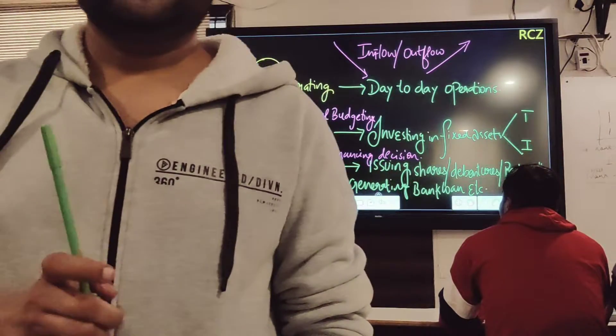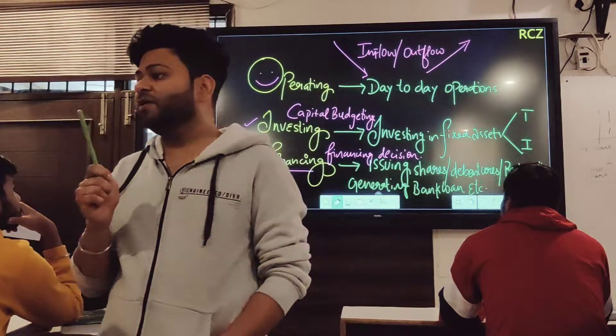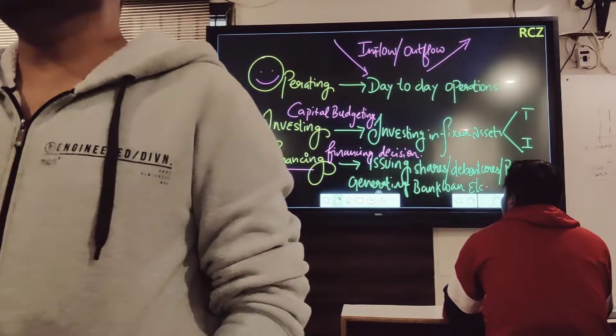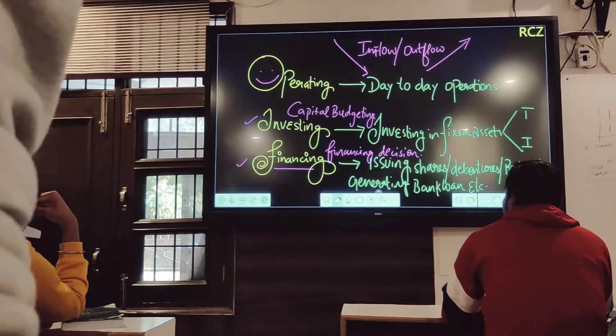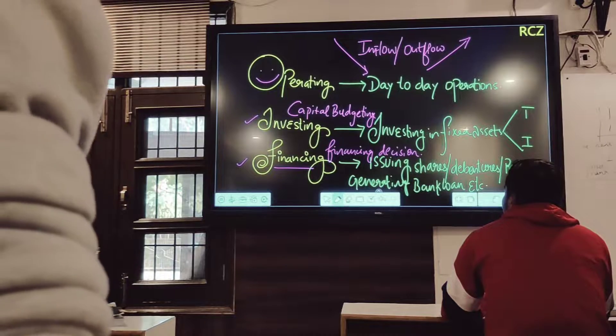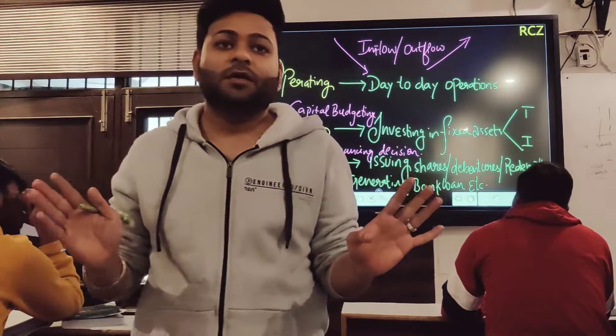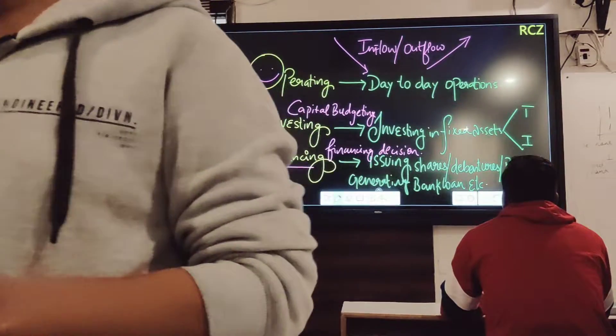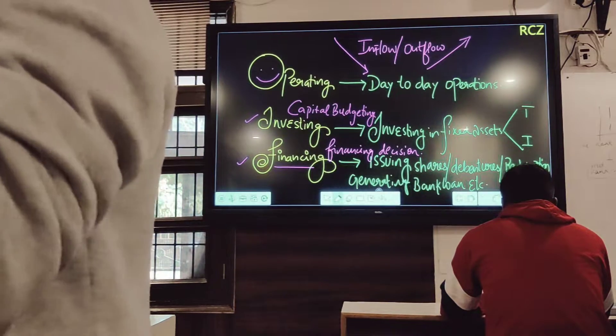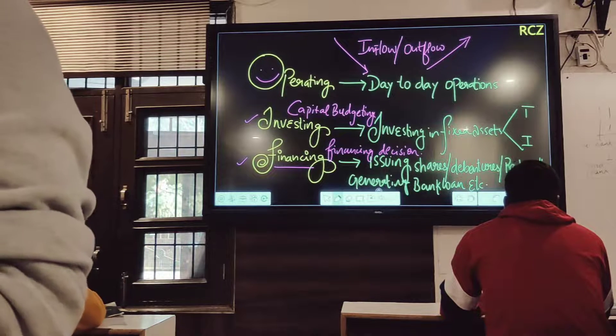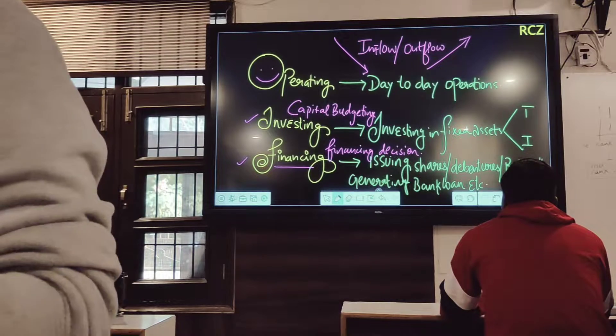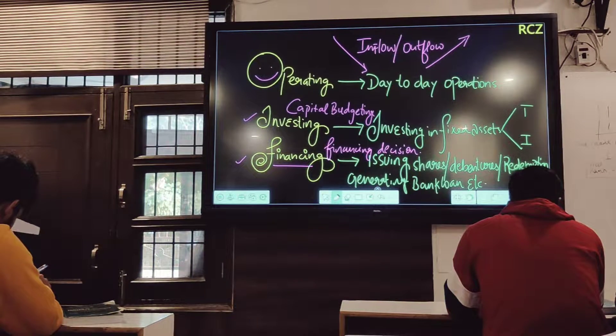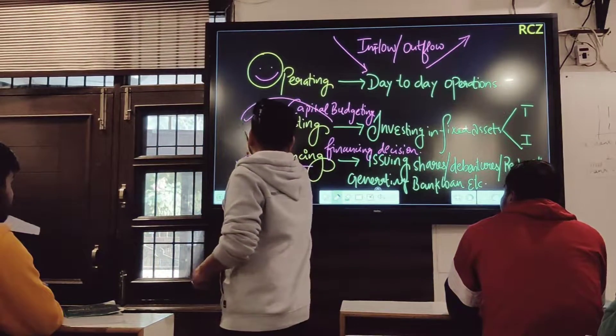A shopkeeper sells books. If the same bookseller buys furniture or AC for his home, that's investing. But if my shop is in a furniture market and I buy new beds daily, that's operating activity. The same activity from a different perspective can be different for others. It depends on whether it's a daily job or not.